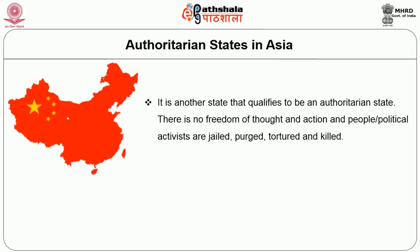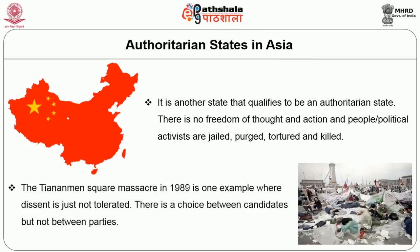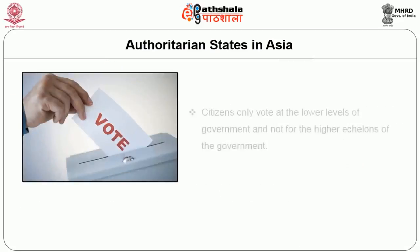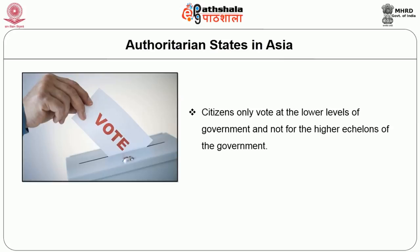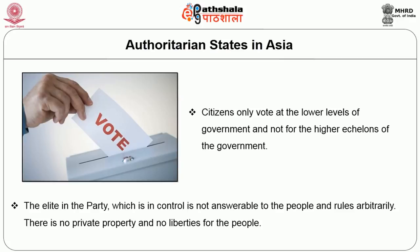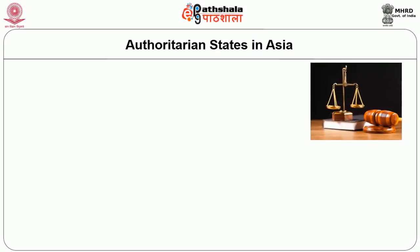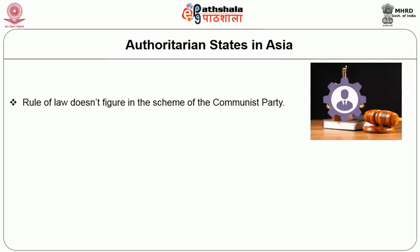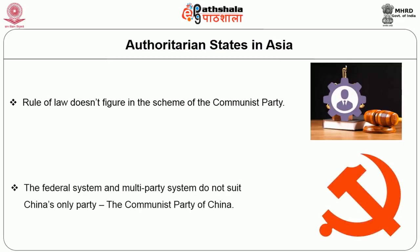China is another state that qualifies as authoritarian. There is no freedom of thought and action; political activists are jailed, purged, tortured, and killed. The Tiananmen Square massacre in 1989 is one example where dissent is simply not tolerated. There is a choice between candidates but not between parties; citizens only vote at the lower level of government, not at higher levels. The elite in the party are not answerable to the people and rule arbitrarily. There is no private property and no liberties for the people. The judiciary is under the control of the party, and rule of law does not figure in the communist party's scheme. A federal system and multi-party system do not suit China's only party — the Communist Party of China.